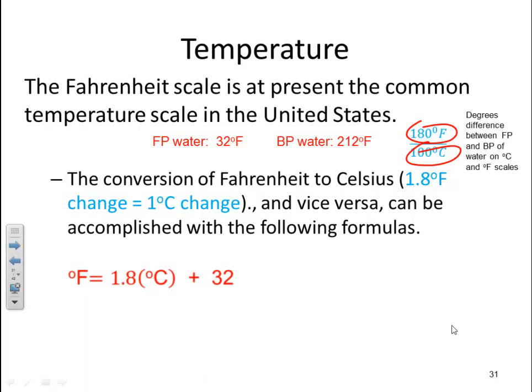So your equation is degree Fahrenheit equals 1.8 times degree C plus 32. If you wanted to solve for degree C, you'd rearrange it mathematically, subtract the 32, and divide by the 1.8. So you get degree C equals degree Fahrenheit minus 32 divided by 1.8. You can either memorize the two equations or be able to calculate it with arithmetic to determine the quantity in question.